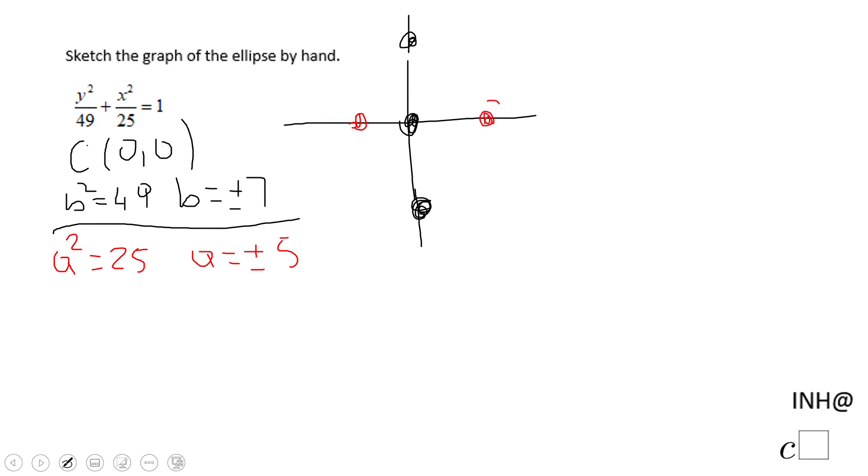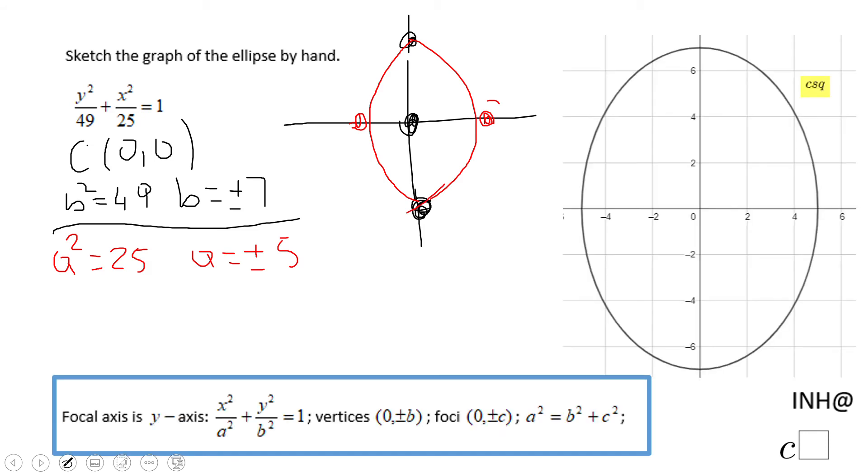So you notice I plot two points, the (5,0) and the (-5,0), and this is the ellipse sketch by hand. Of course it's not a perfect one. If you want a good one, you can see it right here.